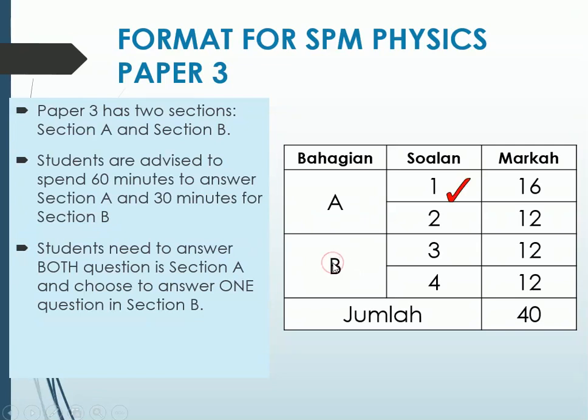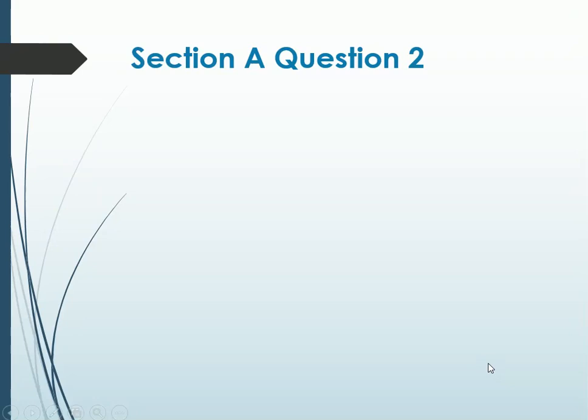Students need to answer Question 1 and Question 2 in Section A. Section B, pick one of it. And from 16 plus 12 plus 12, you will get 40 marks in Paper 3. So alright, today is Section A, Question 2. So I hope you are ready and we're going to start now.